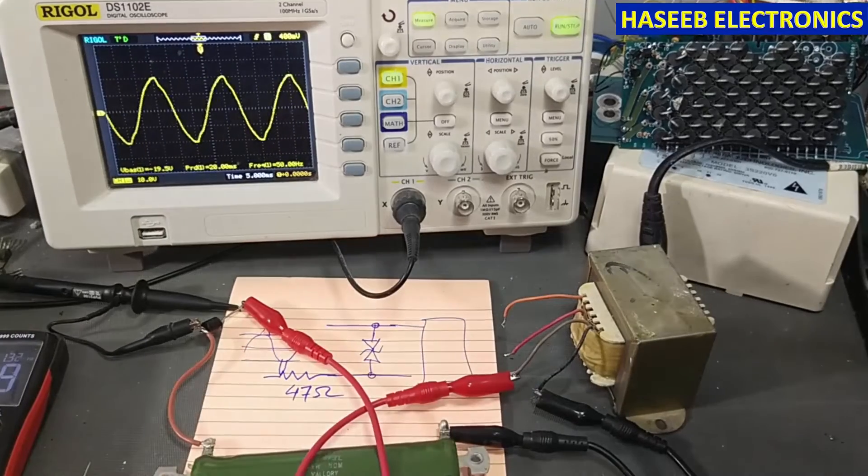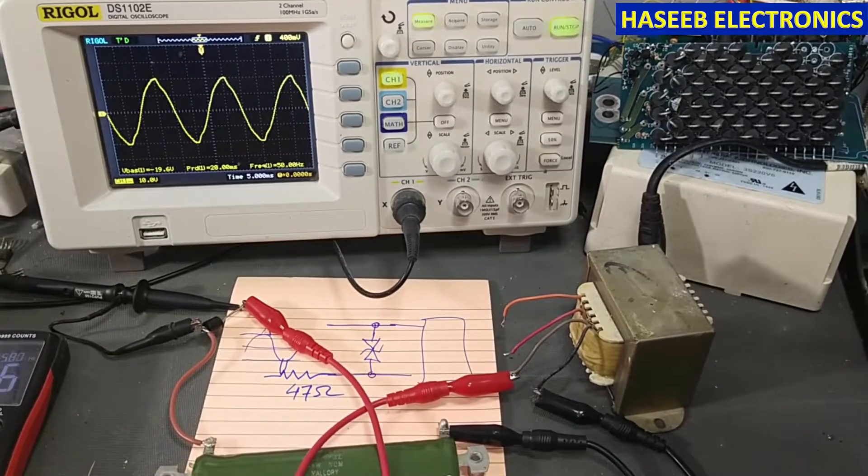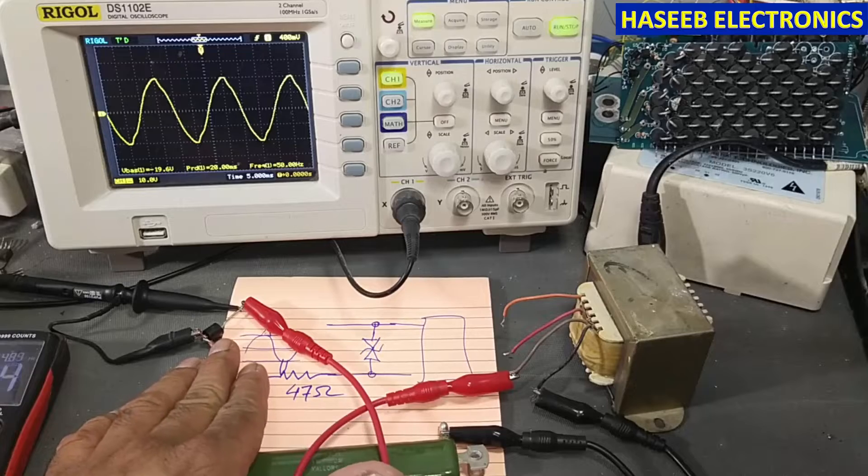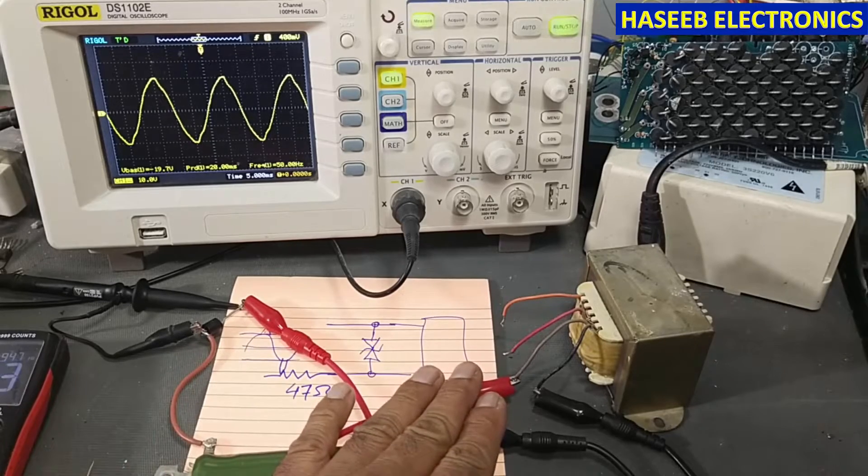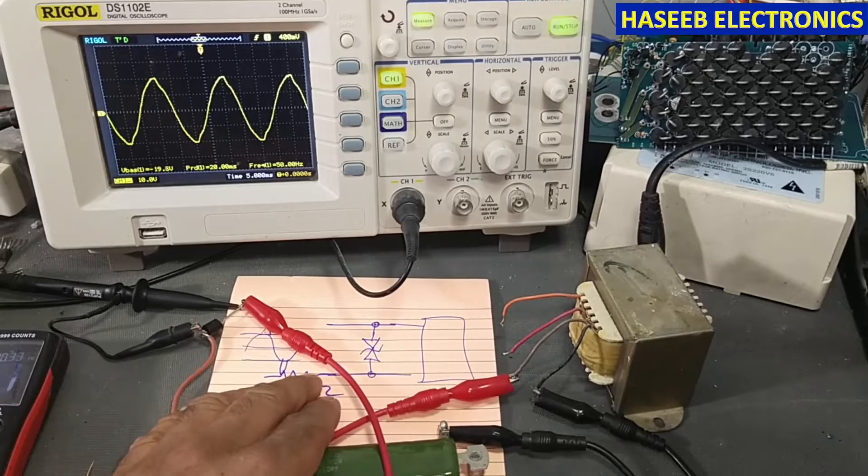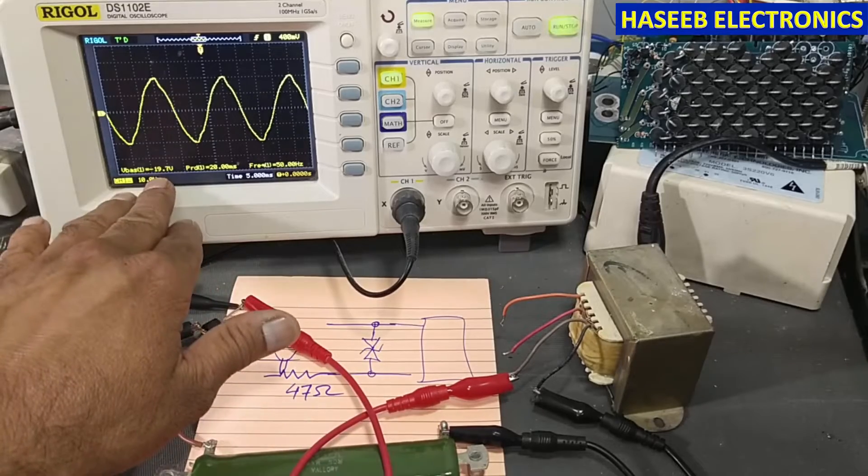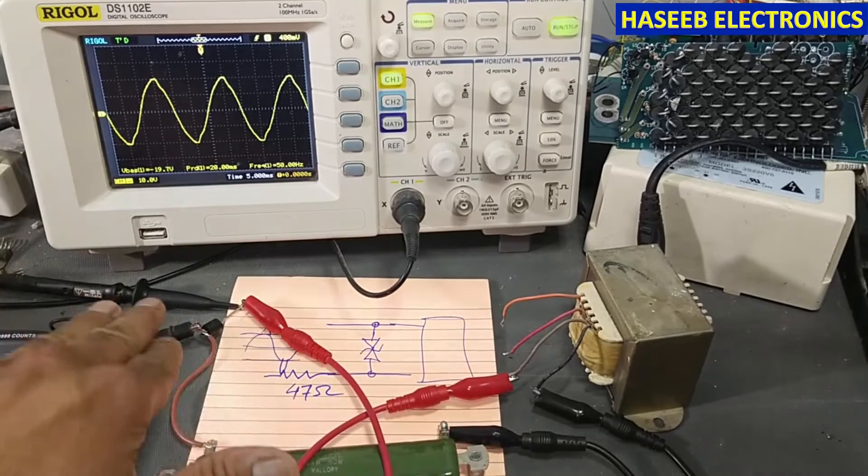Welcome back to my channel. In this session, we're going to do a practical experiment for this bidirectional TVS. When the voltage is less than its TVS voltage, its Zener voltage of 19.6 volts, this 22-volt TVS allows all voltage to pass through as is.